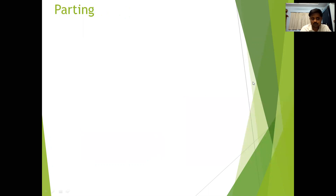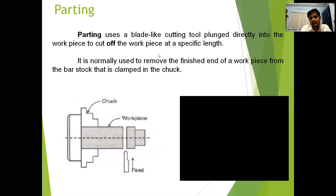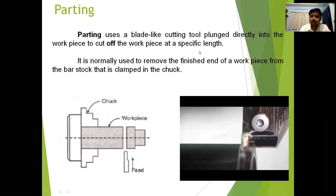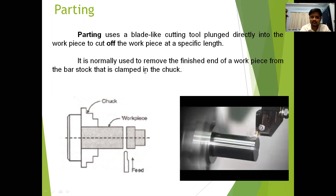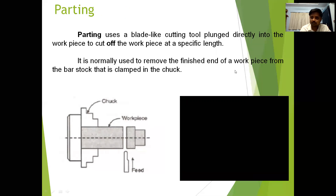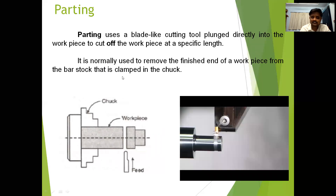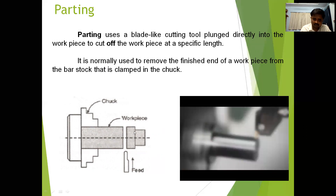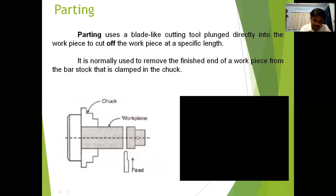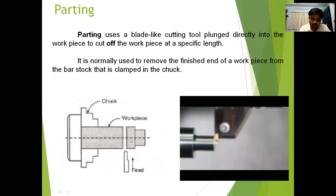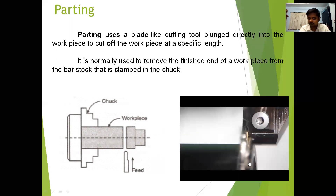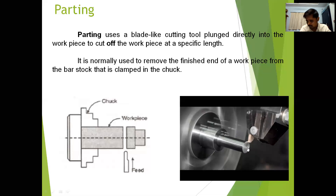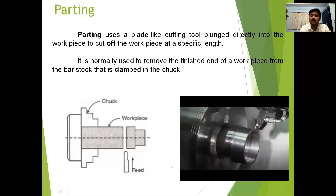Next one is parting. Parting uses a blade-like cutting tool plugged directly into the workpiece to cut off the workpiece at a specific length. It is normally used to remove the finished end of the workpiece from the bar stock clamped in the chuck. After completion of an operation, we want to separate the finished product from the base material, so we use the parting operation. By using this cutting tool, we are removing the finished parts from the base metal.